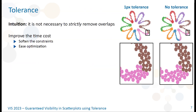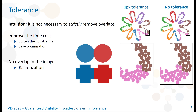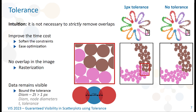The main idea of GIST is to tolerate some overlaps to soften the constraints and ease its convergence. Managed in regard of the target resolution of the visualization image, the tolerated overlap can even be lost during the rasterization process, meaning that there is no downside for the information visualization. Finally, the tolerance is bounded to always guarantee that data nodes remain visible in the target resolution.